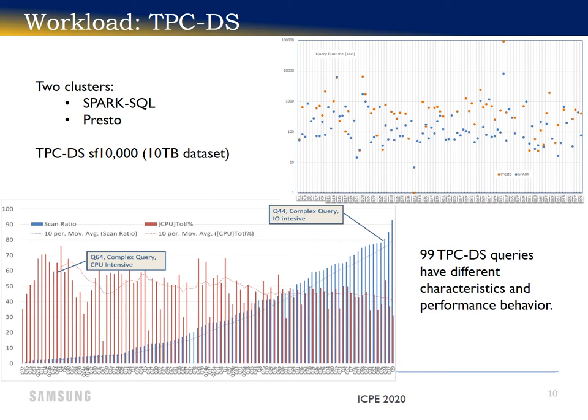Not all queries can be executed by both engines, and the most common error is out of memory, which is due to intermediate results not fitting in the cluster memory. The 99 queries by design have very different characteristics and performance behavior.